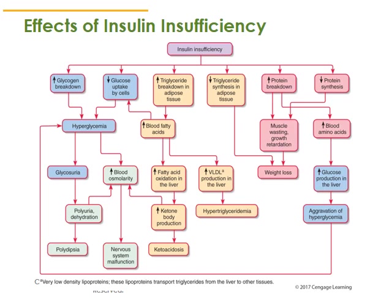This flow chart illustrates the metabolic complications that occur in diabetes mellitus due to insulin insufficiency. Starting from the left, there is an increase in glycogen breakdown — glycogen is a storage form of carbohydrate that breaks down into glucose, entering the bloodstream and causing hyperglycemia. There is also decreased glucose uptake by cells. These factors together contribute to hyperglycemia, and when blood sugar exceeds 200 milligrams per deciliter, glucose spills into the urine causing glycosuria.